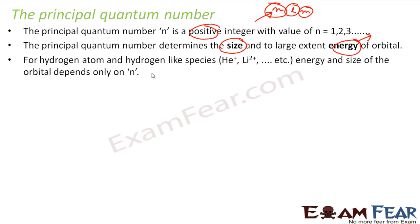For hydrogen and hydrogen-like species, energy and size depends only on n. Please note, this is only for hydrogen and hydrogen-like species which have only one electron.